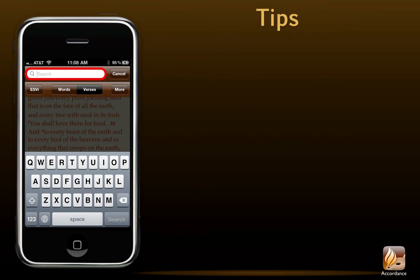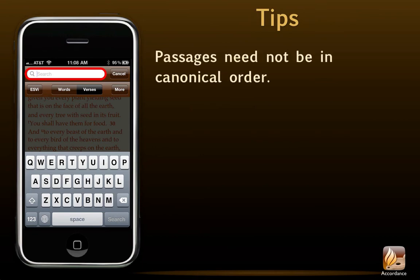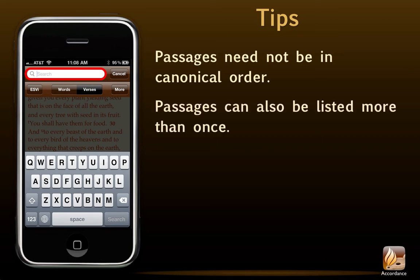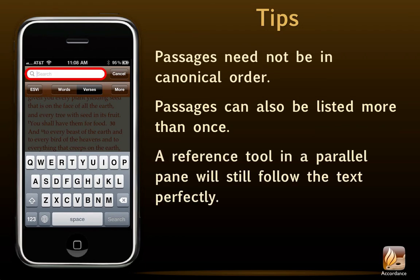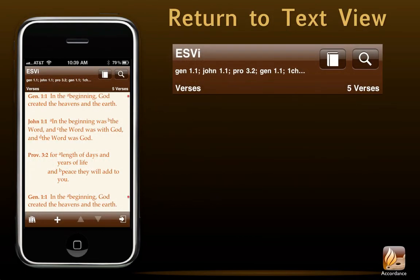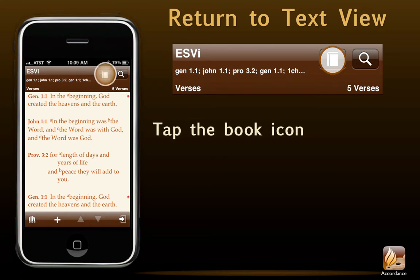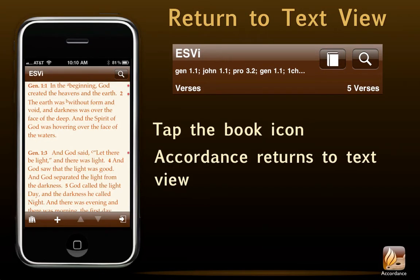I'd like to also pass along three tips. First, passages need not be in canonical order, and they can also be listed more than once. Finally, any reference tool in the parallel pane will still follow the text perfectly. This makes it easy to teach or preach from Accordance iOS or use it to follow someone else's lesson. Done with your search and ready to return to regular full text view? This book icon appears only when we're in search view. If at any point we want to view the entire text, we simply tap it. Accordance will return to text view, opening the text to the exact reference that was displayed at the top of the search view pane.